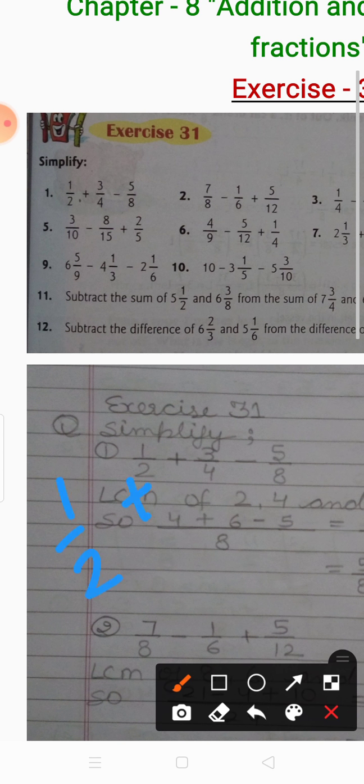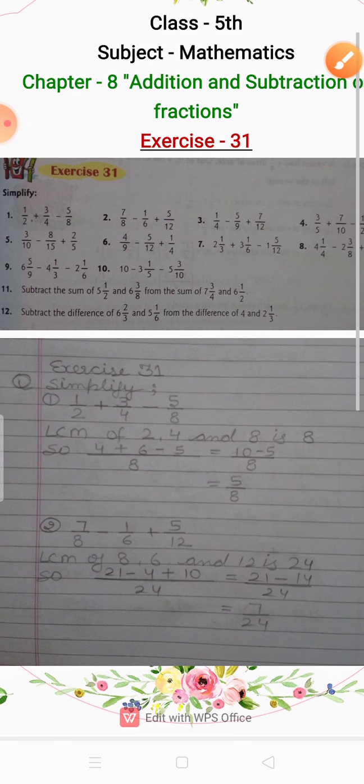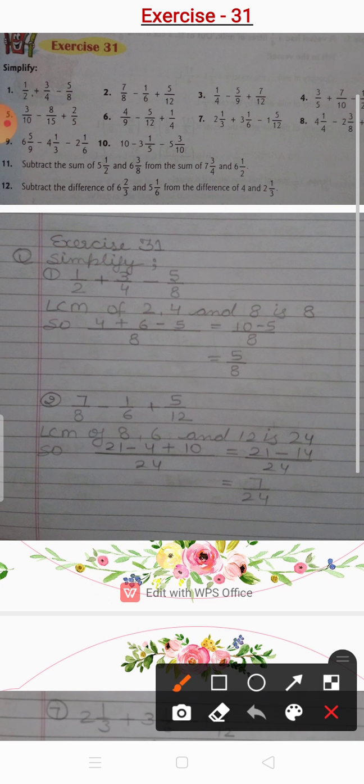The first question is: one upon two plus three upon four minus five upon eight. You have to add these two and subtract the answer from five upon eight. Fractions addition and subtraction is very easy. The denominators are different, so we'll take the LCM. Taking LCM of 2, 4, 8, our answer is 8.